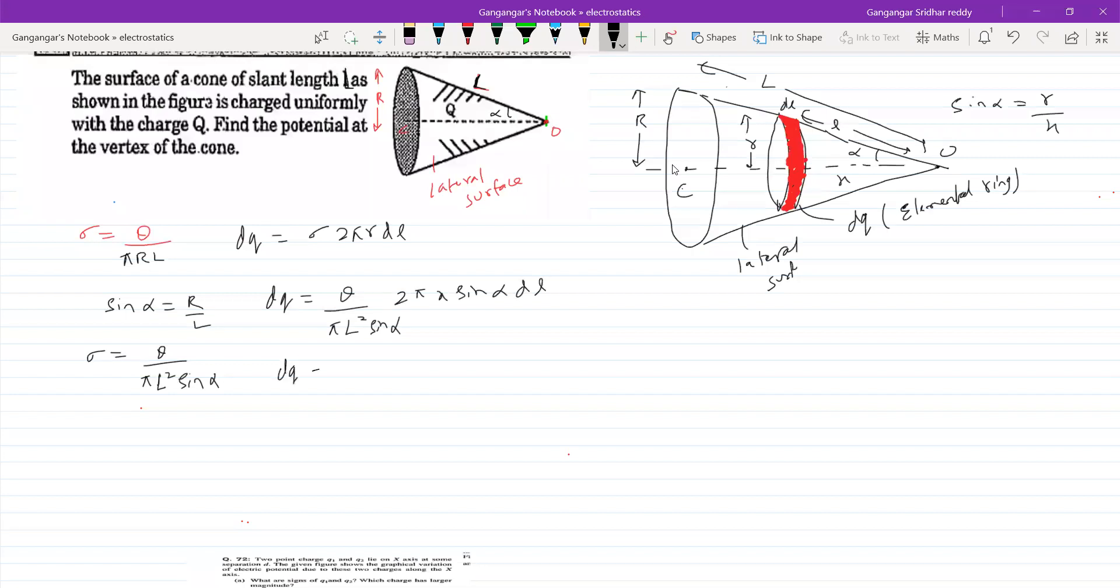So the value of DQ will be, pi gets canceled, alpha gets canceled. So we'll end up with 2Q... Sine alpha is R by L, L sine alpha. Look at all the symbols here. So 2Q X by L squared DL. I think this is very important once you reach here. The rest of all everything is substitution and calculation.